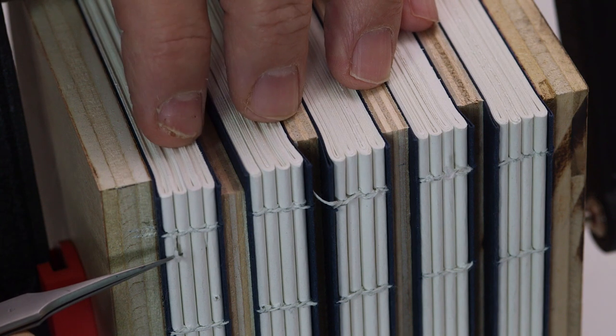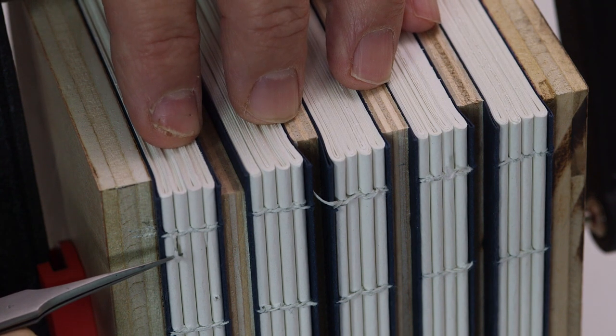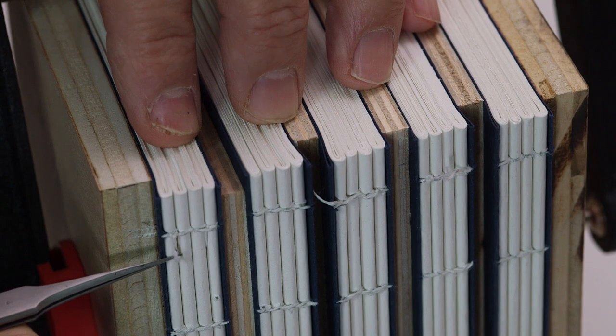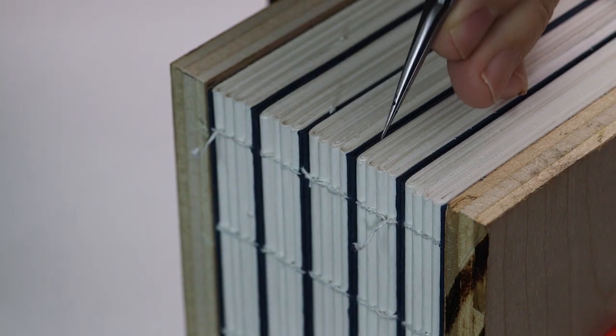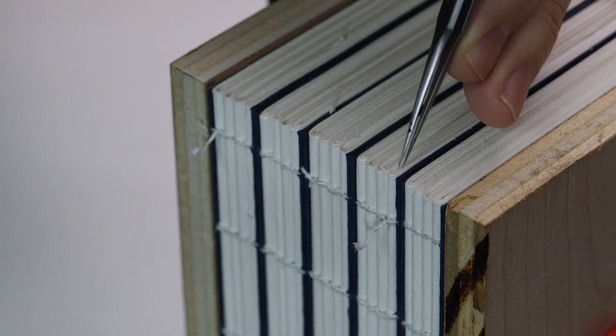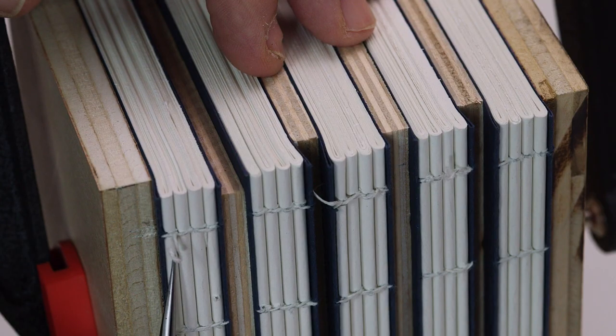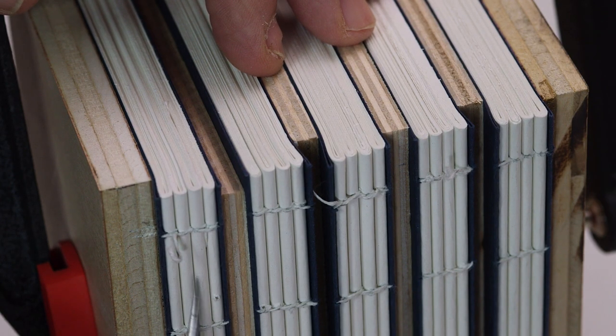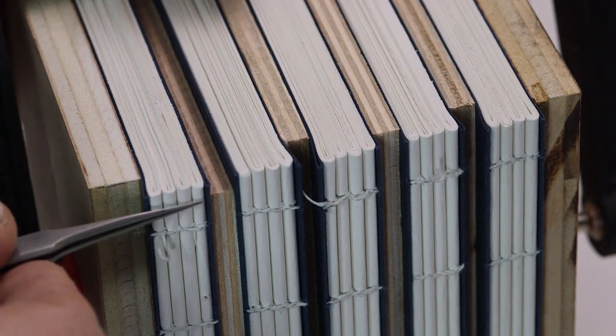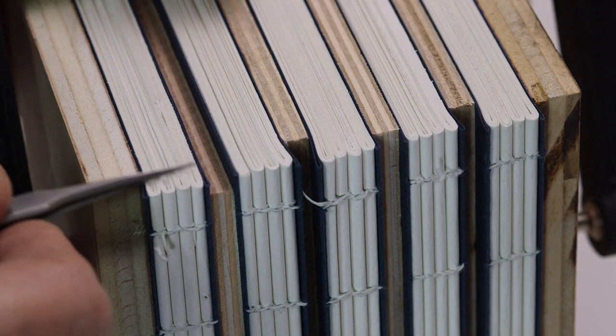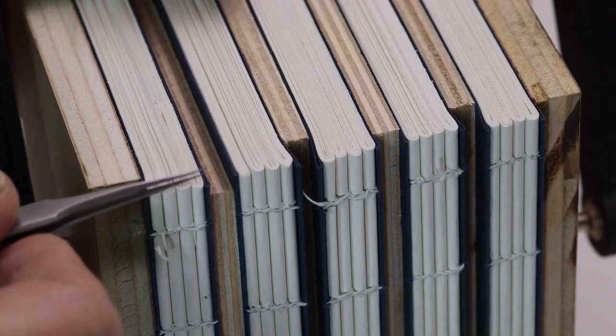I'll start by putting adhesive where the thread was tied off. I want the thread to rest between the signatures. Since the paper I use for this book is thicker drawing paper, I have small spaces between the signatures where the thread can nest. I'm careful not to go over the top or the head of the book as well as the base.